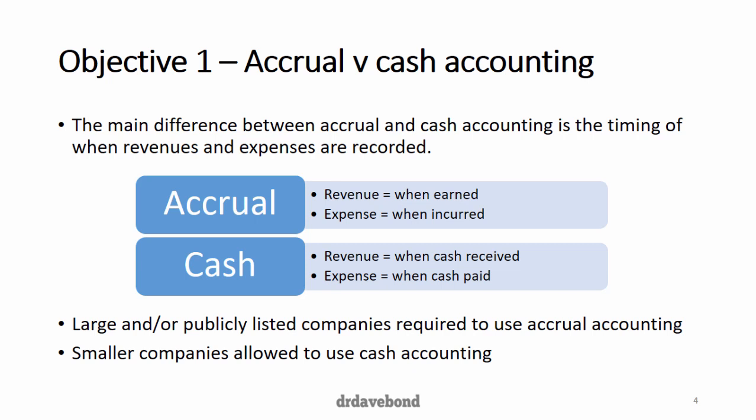Cash accounting, on the other hand, is a much simpler proposition. Revenue is simply when the entity receives cash, and expense is simply when the entity pays cash. Obviously a lot simpler to work with because you're just looking at when cash moves in or out, but it doesn't necessarily give a true reflection of what's going on within the entity itself.